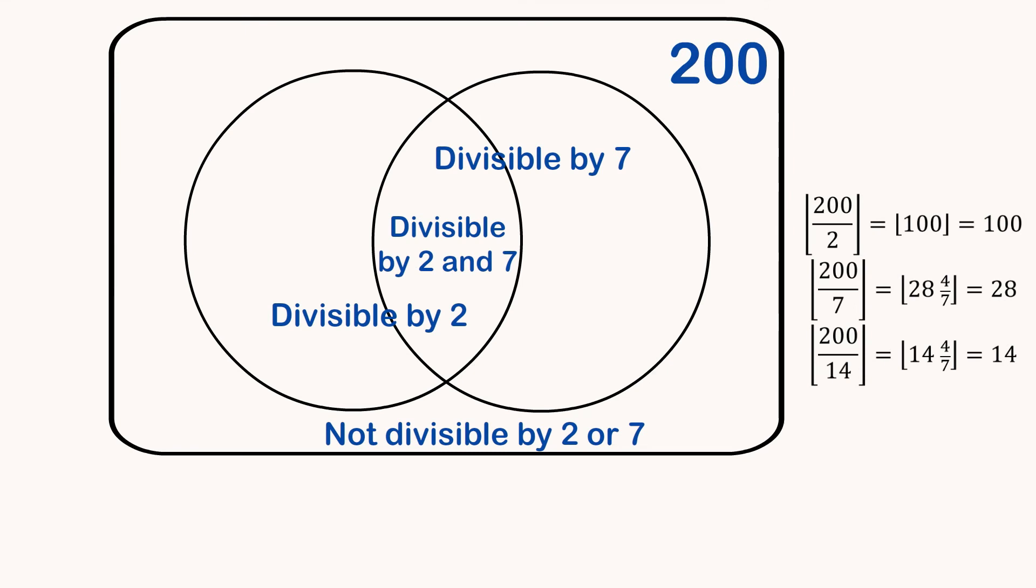And we're also going to need the number of numbers that are divisible by both 2 and 7, which means they're divisible by 14. Just put it through that formula again with the floor function and we get 14 numbers.